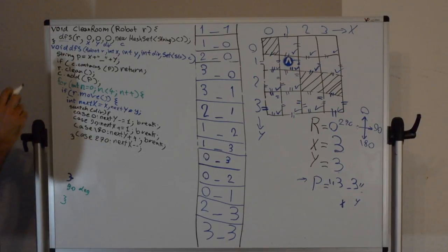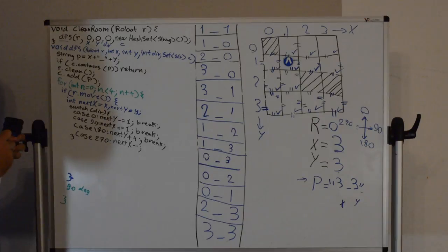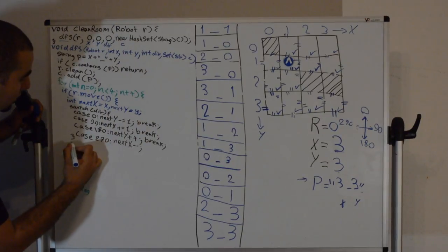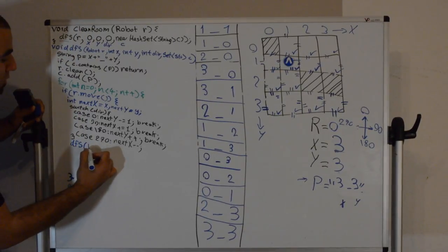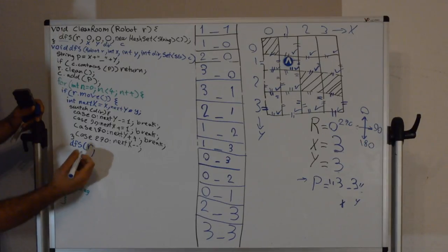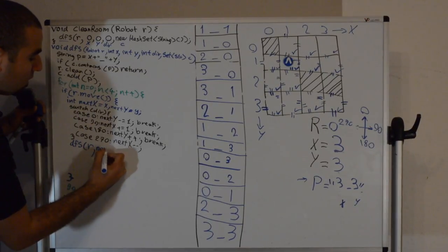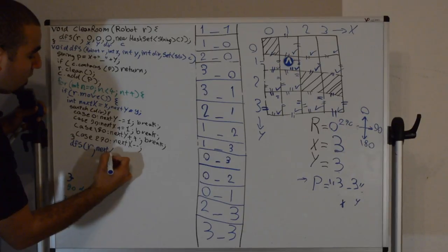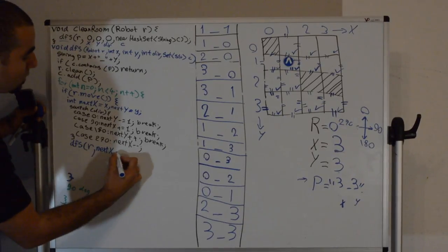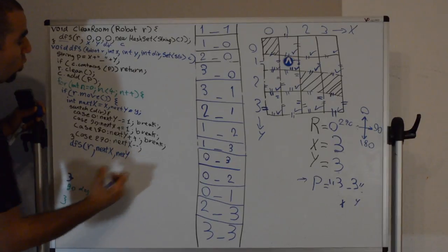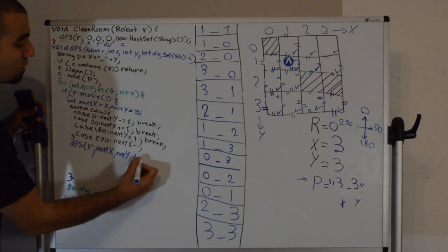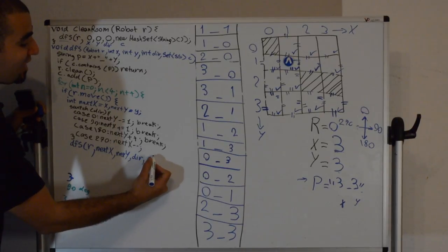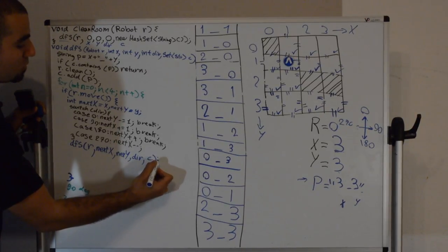After computing nextX and nextY, we call dfs(r, nextX, nextY, direction, c) — passing current direction since we haven't rotated yet. Once this DFS branch completes and returns, we perform the physical backtracking: r.turnLeft(), r.turnLeft(), r.move(), r.turnRight(), r.turnRight(). This returns the robot to its original position facing the original direction.